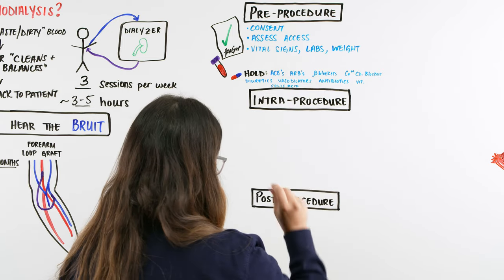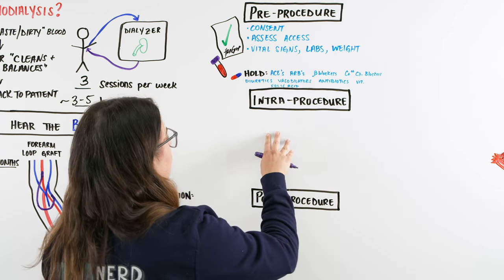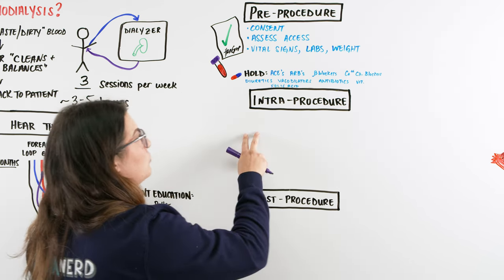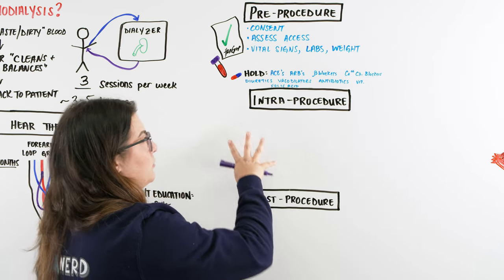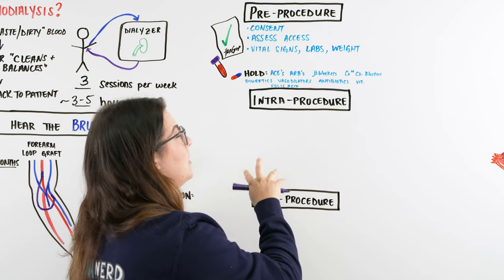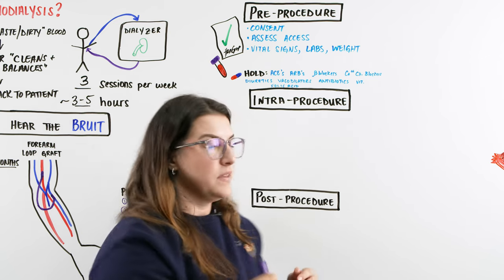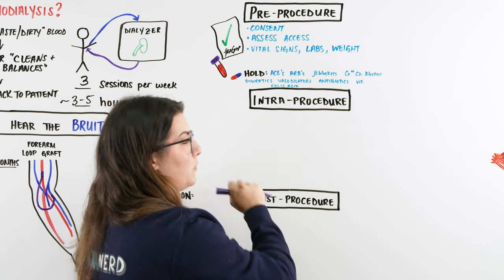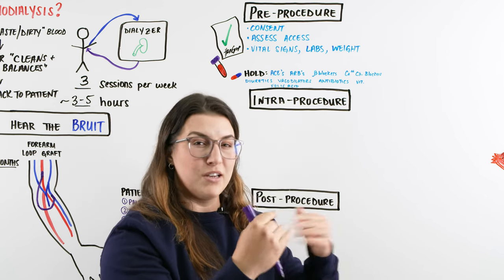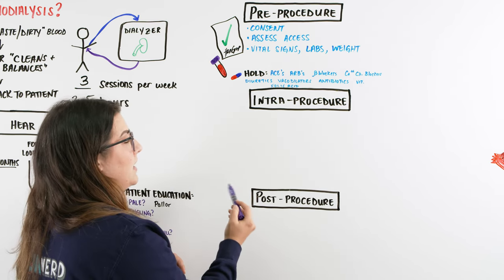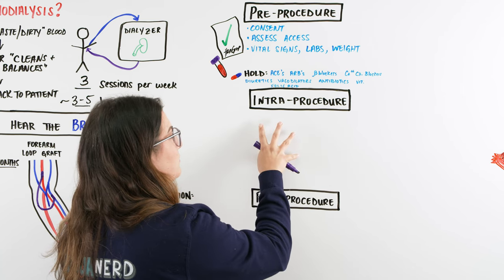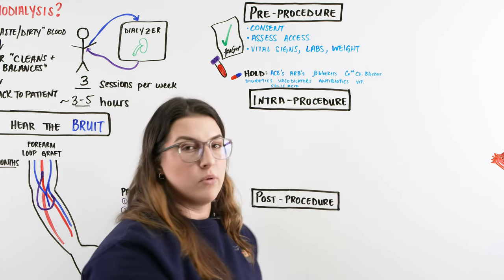Once everything is ready, the patient's vascular access needles are inserted and dialysis begins. The intra-procedure phase is mostly about monitoring: vital signs within normal ranges, lab work, and the dialyzer machine itself. The dialyzer controls fluid rates, and we can add anticoagulants like heparin to prevent blood from clotting at the needle tips. We can also adjust the dialysate composition for individual patients. Overall, intra-procedure care is keeping an eye on the patient and the machine.